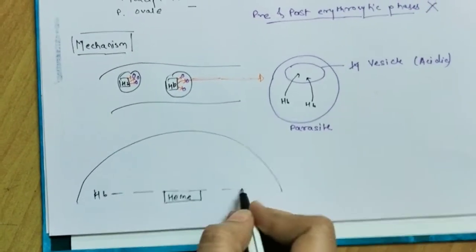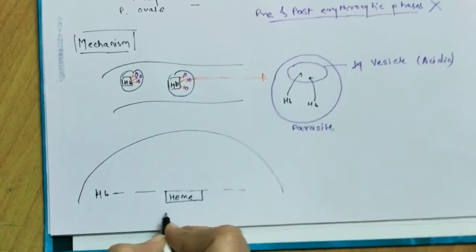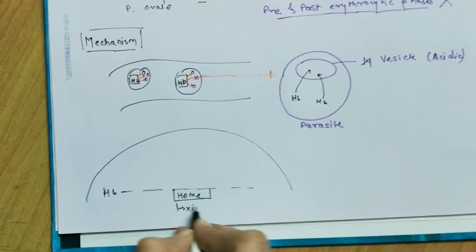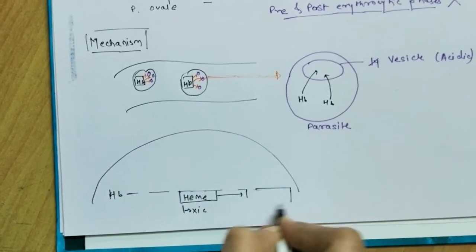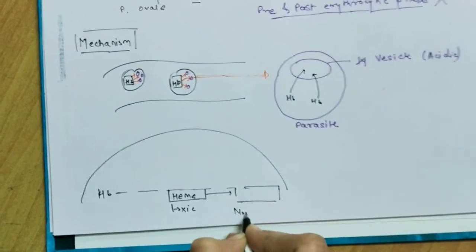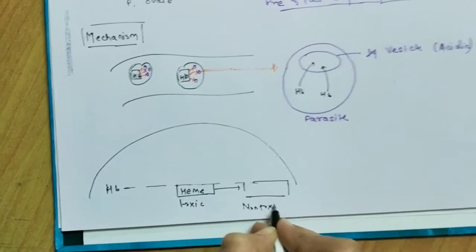So heme is one of it and which is really toxic to the plasmodium. Hence the parasite converts it into a non-toxic form of heme, which is also called as the hemozoin, a parasitic pigment which is hemozoin, non-toxic.